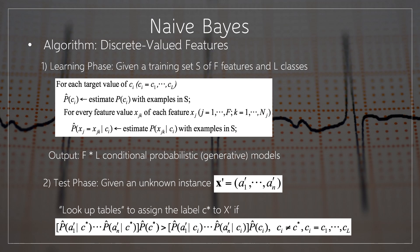For each target value CI where CI equals C1, C2, so on up to Cl: P-cap of CI is the estimate of P of CI with examples in S. For every feature value Xj,k of each feature Xj, where j equals 1, 2, so on up to F and k equals 1, so on up to Nj, P-cap of Xj equal to Xj,k given CI is the estimate of P of Xj,k given CI with examples in S.